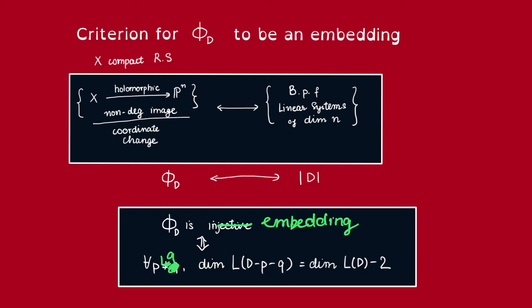Because in the case when P is equal to Q, this is just saying that the dimension of L(D - 2P) is equal to dimension of L(D) minus 2. And by our previous discussion, this just means that the map φ_D is going to be injective on the tangent space at P.